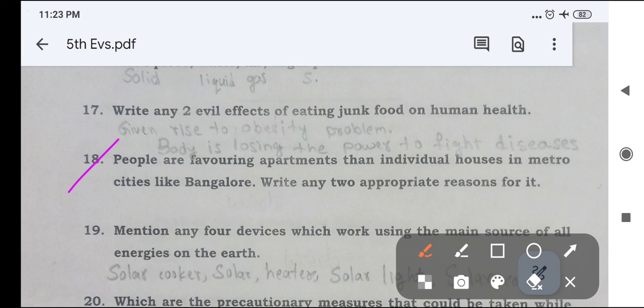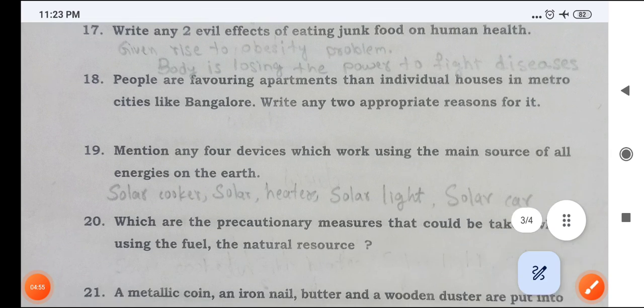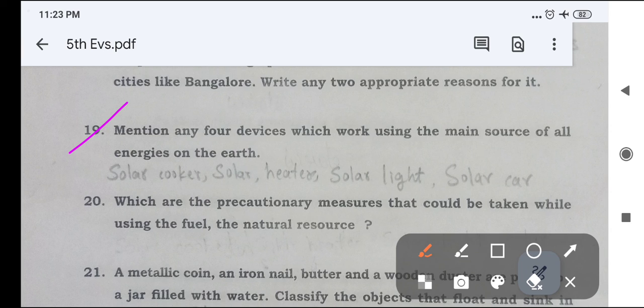Next, question number 18, people are favoring apartments than individual houses in metro cities like Bangalore. Write any two appropriate reasons for it. Next, 19th question is, mention any four devices which work using the main source of all energies on the earth. Main source of all energies on earth is solar energy: solar cooker, solar heater, solar light and solar car. These are the main sources of energy on earth.